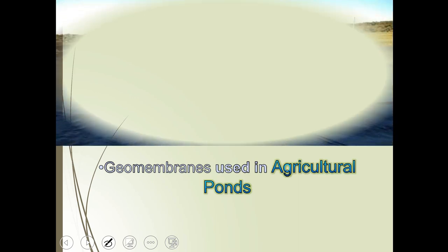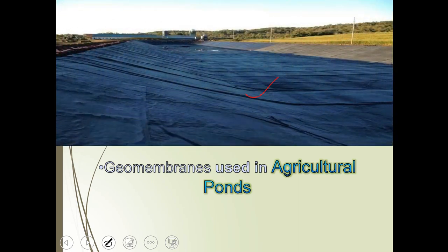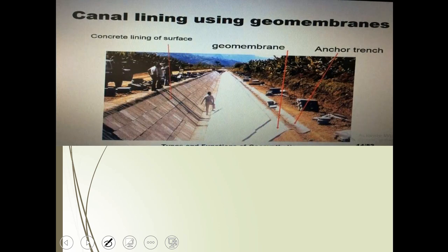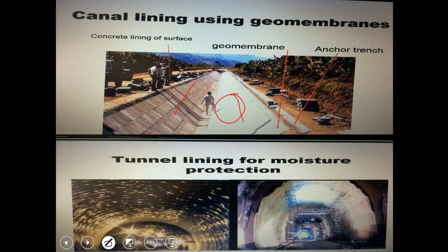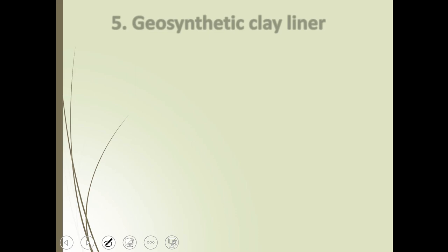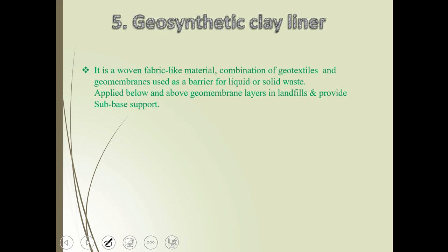Geomembranes are used as a fluid barrier in designing drainage systems, as a damp proof course in floors and roofs, and in agriculture ponds. You can see in the picture the geomembrane layer placed over the agriculture pond and canal lining. Geomembranes provide an impervious layer for canal lining and tunnel lining for moisture protection.